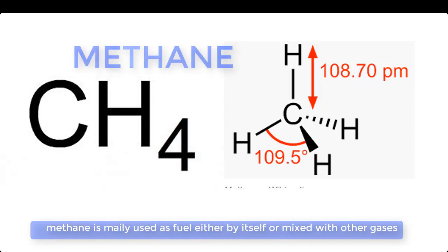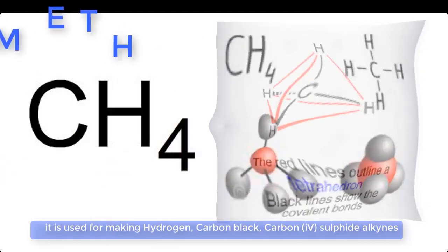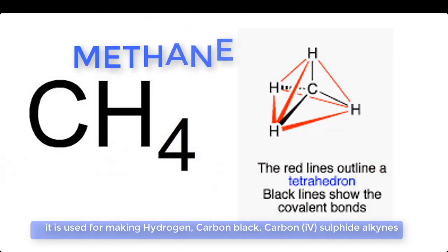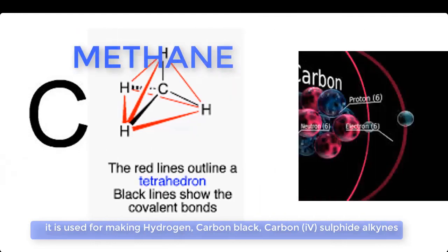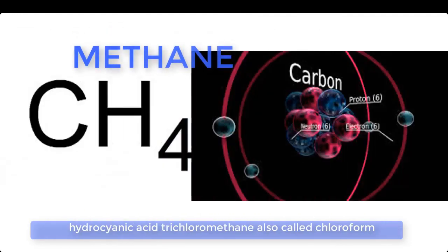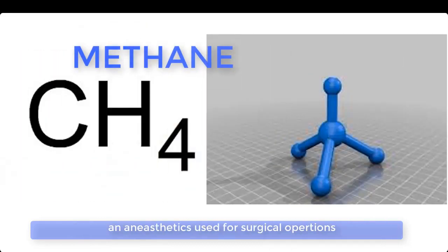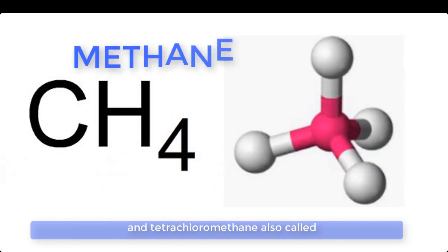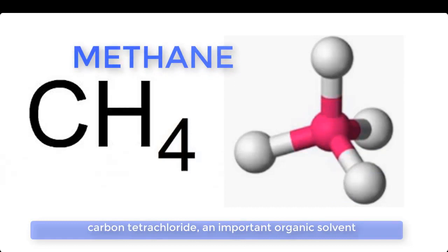Methane is mainly used as fuel, either by itself or mixed with other gases. It is used for making hydrogen, carbon black, carbon disulfide, alkynes, hydrocyanic acid, trichloromethane (also called chloroform) — an anaesthetic used for surgical operations — and tetrachloromethane (also called carbon tetrachloride), an important organic solvent.